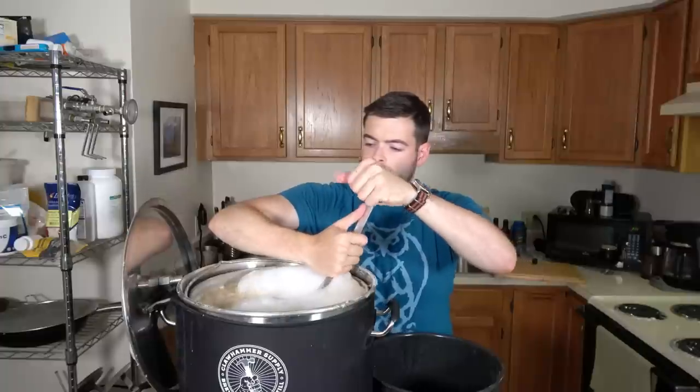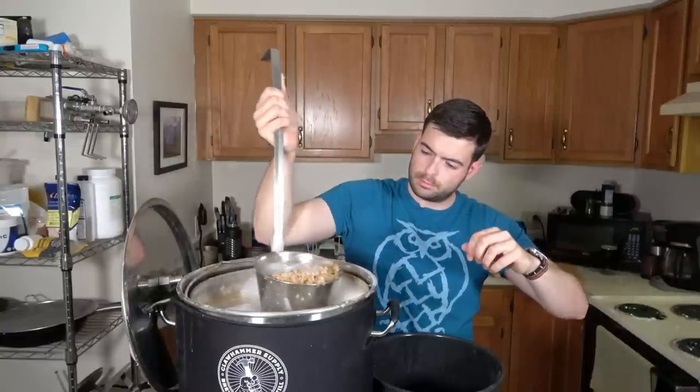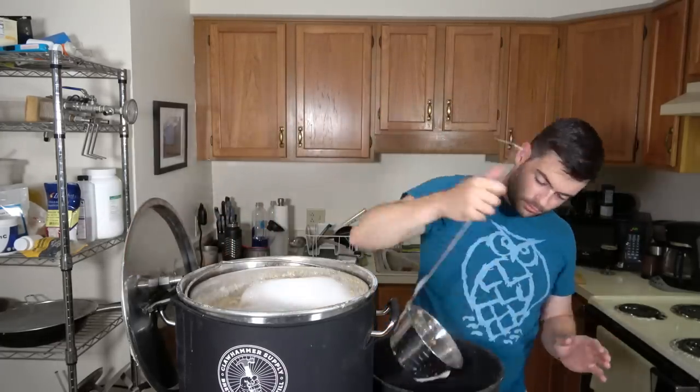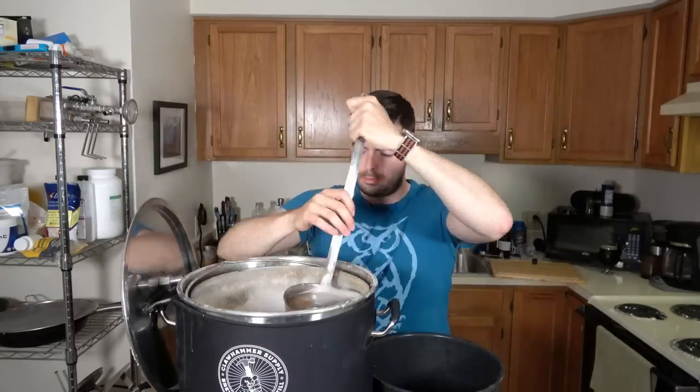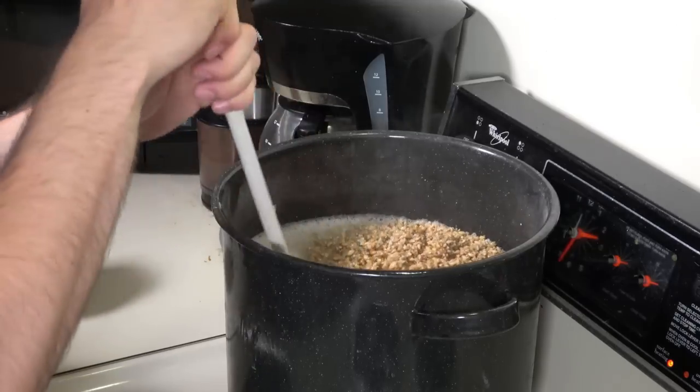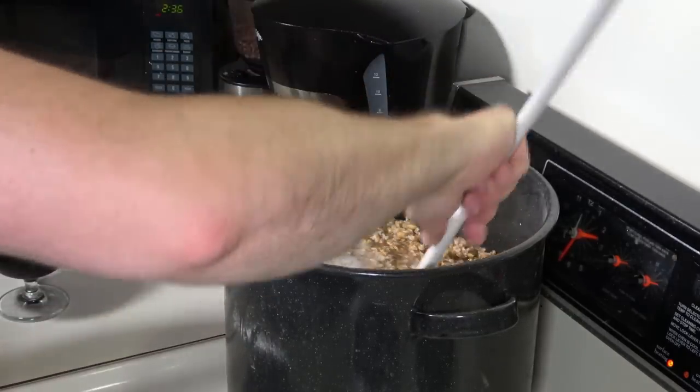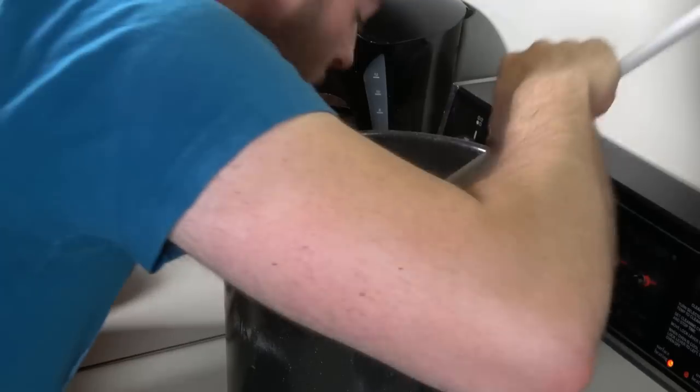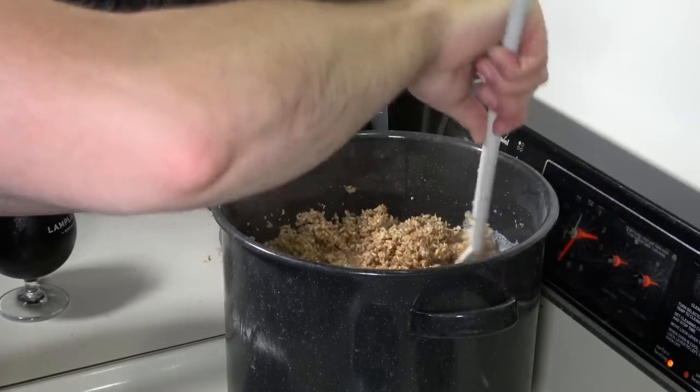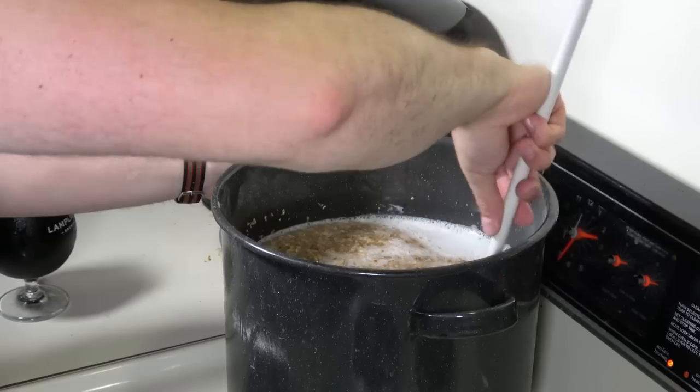I let the mash sit at 152 Fahrenheit for 45 minutes, and then I began to decoct thick mash. You want to make sure you're getting mostly grain and a little bit of liquid when you're doing this. I decocted 9 quarts of thick mash, and then I heated it up to boiling on the stove over medium-high heat, stirring constantly and being sure to scrape the bottom of the pot to get all the grain off of it and prevent scorching. I kept this up for a full 45 minutes. Don't ever walk away from your decoction because the grain will scorch on you, and you don't want that. So you have to really watch over it the entire 45 minutes or so. It does help to put on an episode of your favorite TV show or listen to some music to pass the time.